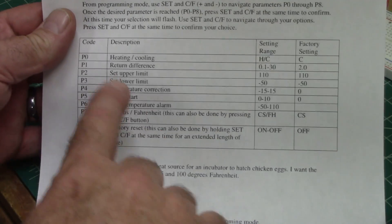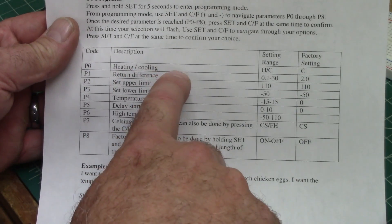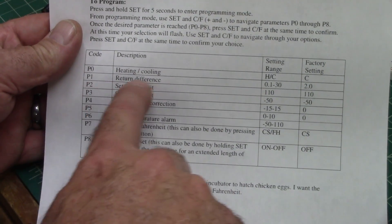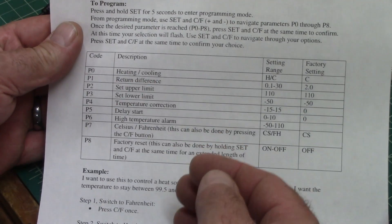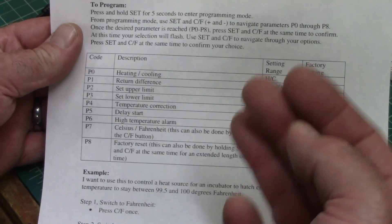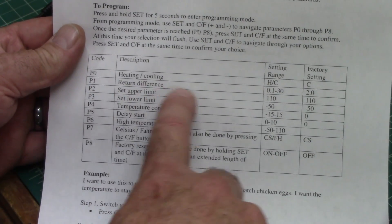So here's all the different modes. You got P0, heating and cooling, which we talked about. P1, return difference. That's the amount that it's going to vary before it's going to turn on and turn off. And we normally set that at two degrees.